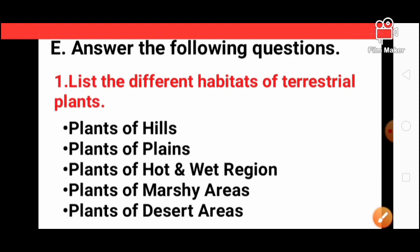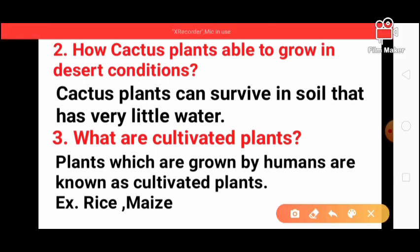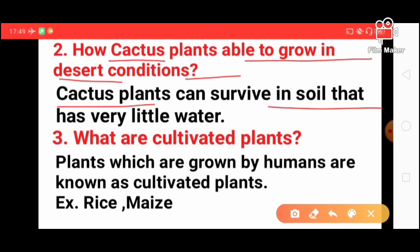Next, how are cactus plants able to grow in desert conditions? Cactus plants can survive in soil that has very little water, so they can grow in desert areas.